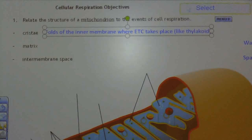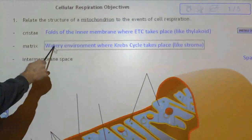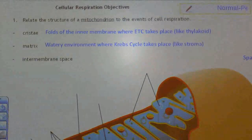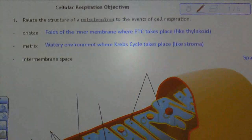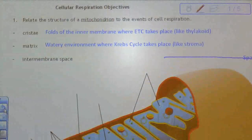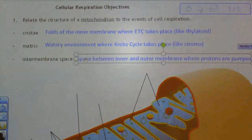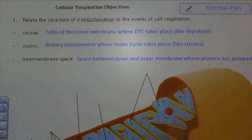The cristae are folds inside the mitochondria where electron transport takes place — this is very similar to the thylakoid membrane that we just saw in photosynthesis. Moving on to the matrix: the matrix is a watery environment where the Krebs cycle takes place, and it is similar to the stroma of the chloroplasts that we just saw in photosynthesis.